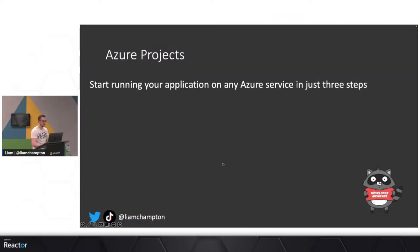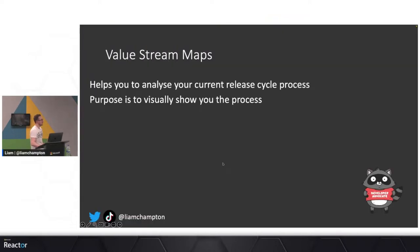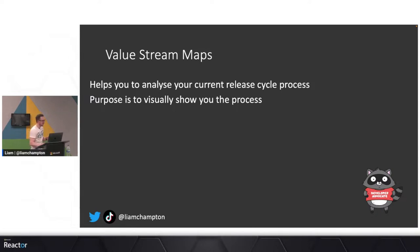Now I'm going to talk about value stream maps. A value stream map is a way to help you analyze your current release cycle — essentially how we're going to turn DevOps into a number. It visually shows you everything you need to know about your process, what happens at every stage, and how you can work through that with your team.